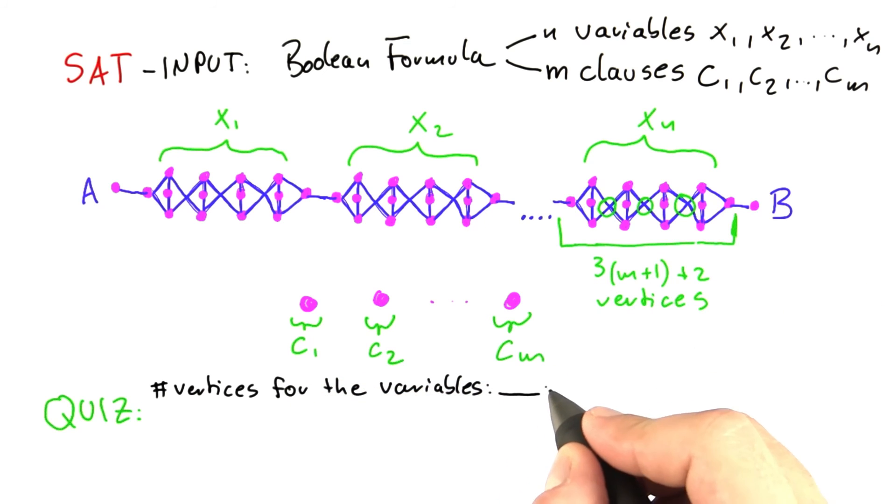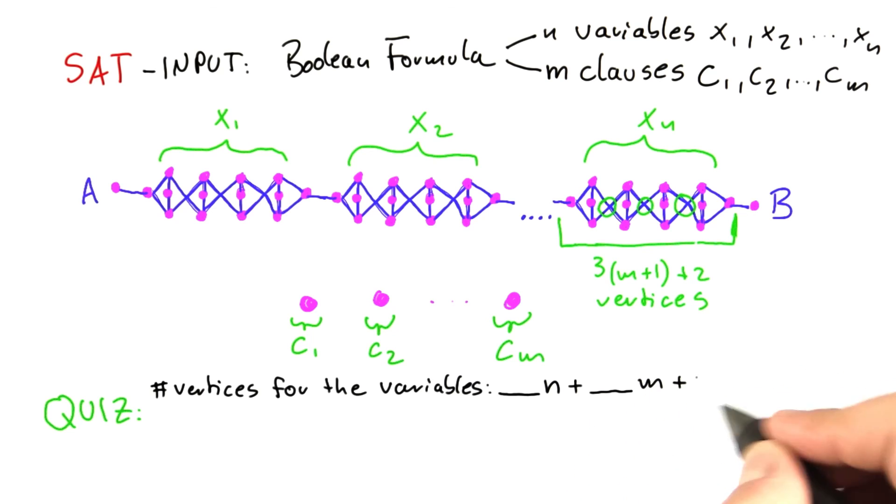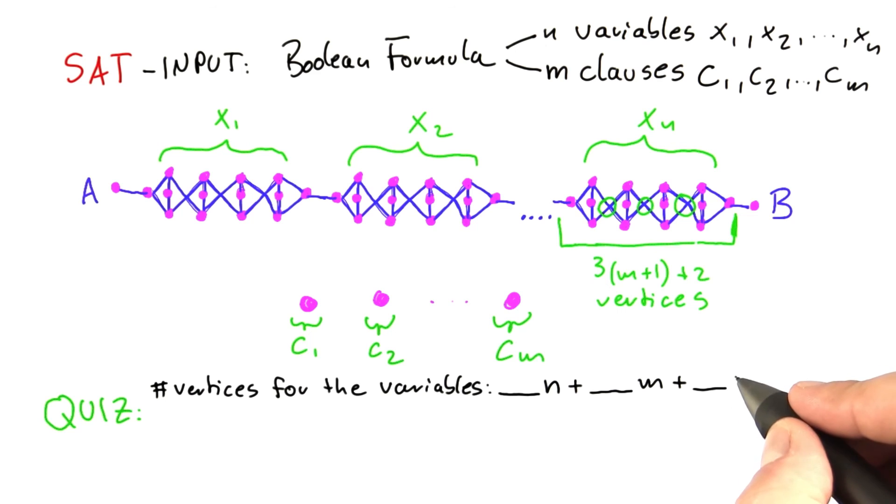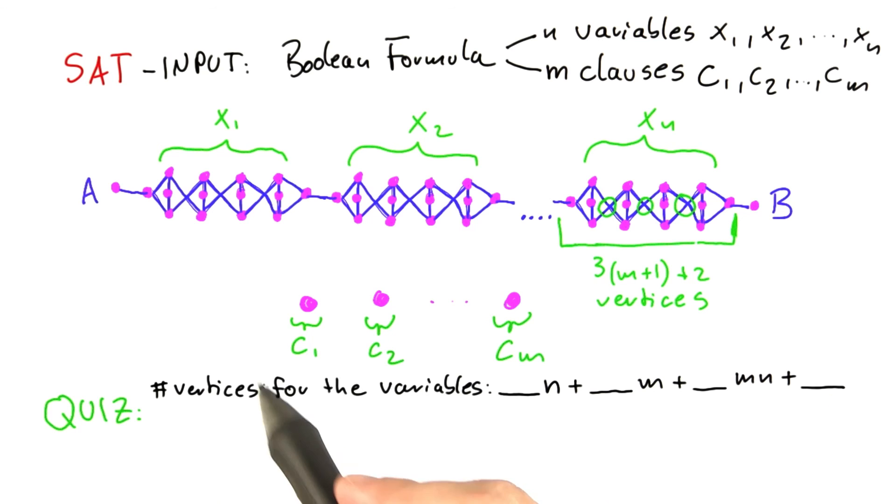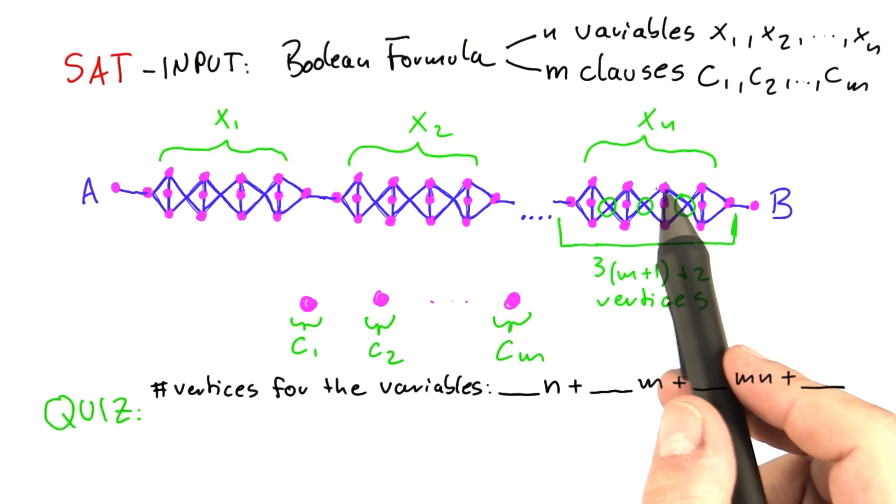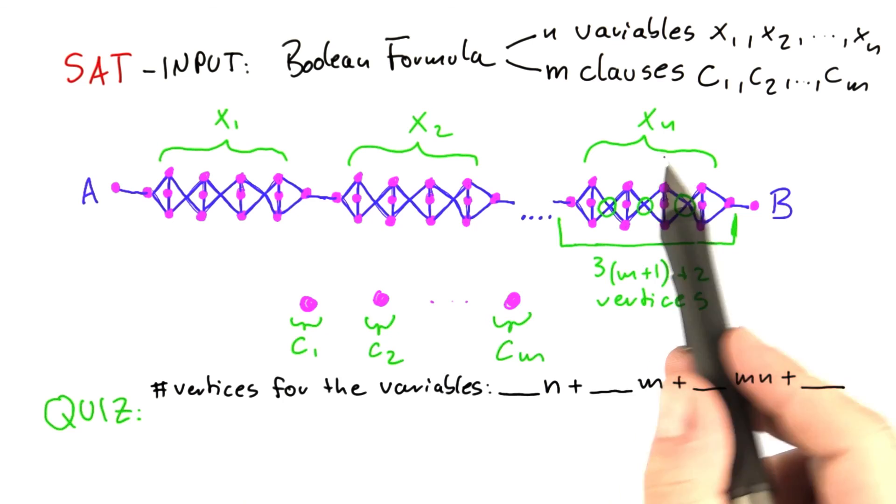so it's going to be some number times n plus some number times m, plus some number times mn, plus possibly some constant. So please give me these four numbers here to correctly count the number of vertices that we have here to represent variables.